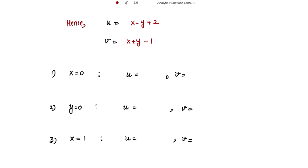The first bounded line is x = 0. Putting x = 0 into the u equation gives u = -y + 2, and into the v equation gives v = y - 1. Solving these two together, we get the equation in terms of u and v: u + v = 1.